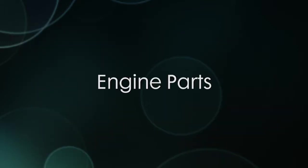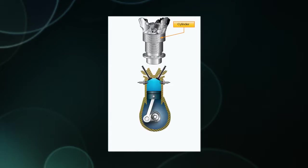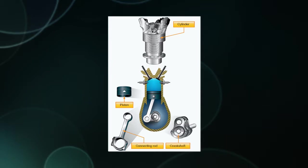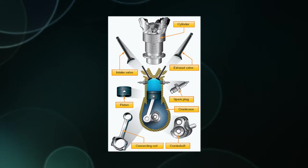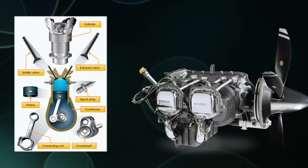Here are some engine parts. We have a cylinder — you have four of these if you have a four-cylinder engine. We have a piston, a connecting rod that connects the piston to the crankshaft, and the crankcase is where the crankshaft rotates. We have spark plugs, intake and exhaust valves — and keep in mind that everything will be sideways because it's horizontally opposed — and the propeller would be at the end of the crankshaft. All four cylinders rotate a crankshaft, and that crankshaft connects to the propeller.